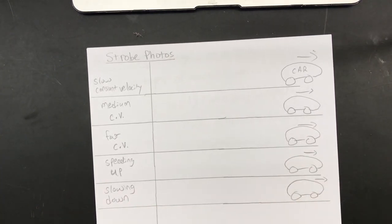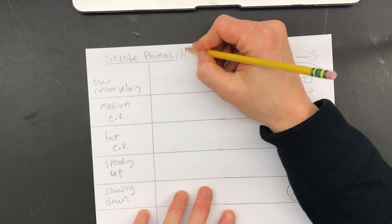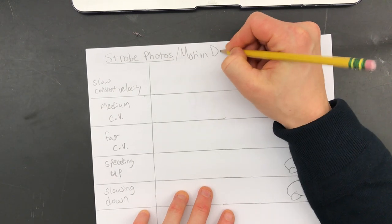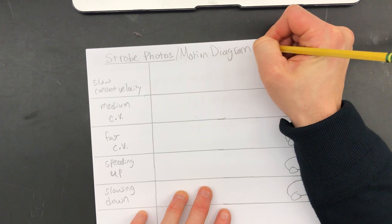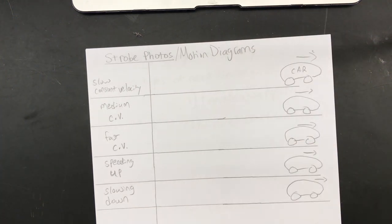Hey everybody, so we're going to do notes on strobe photos, also known as motion diagrams. We're going to use three methods of describing motion. First, right now we're doing a picture. In a couple weeks we'll do a graph with x and y axis to describe motion. And then we will eventually get to equations that we can calculate with. So today is a picture.